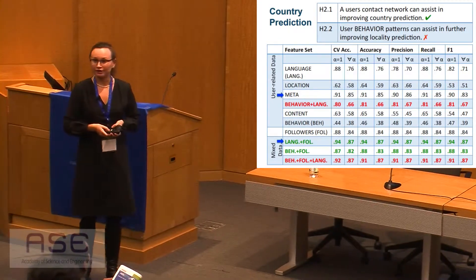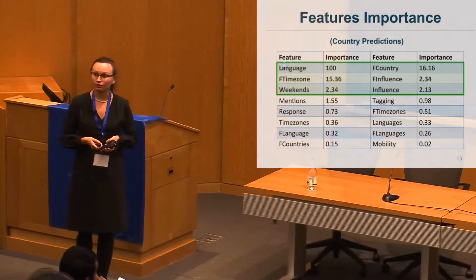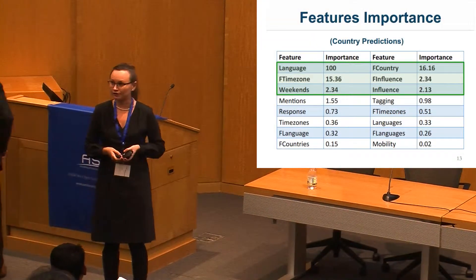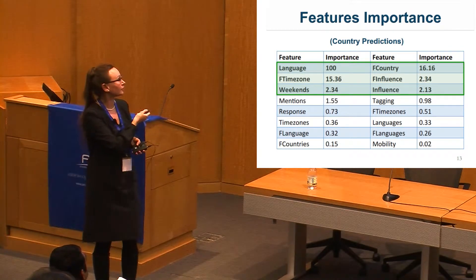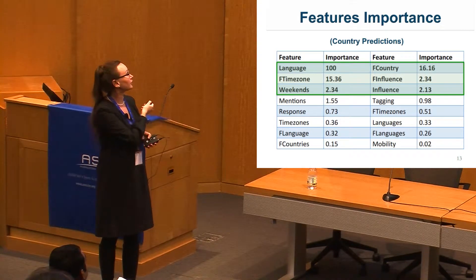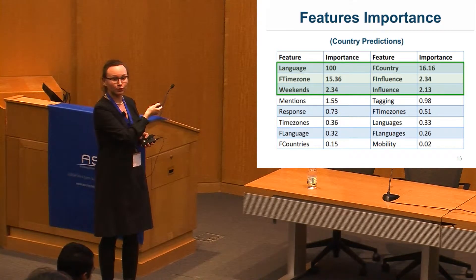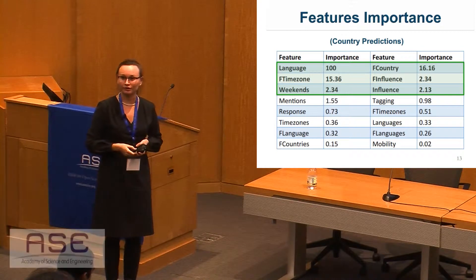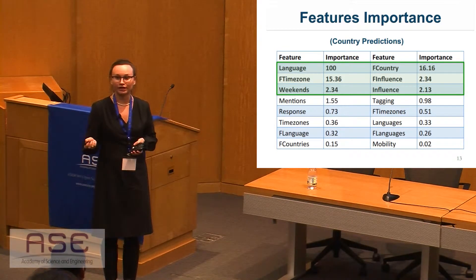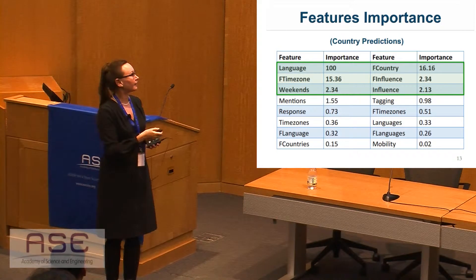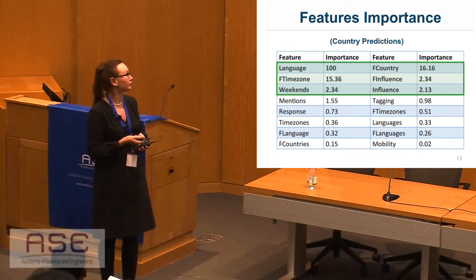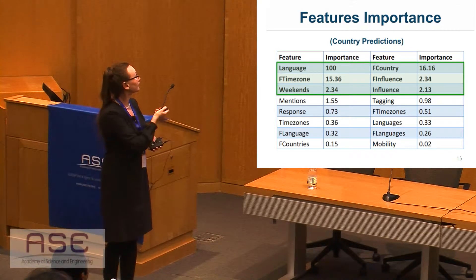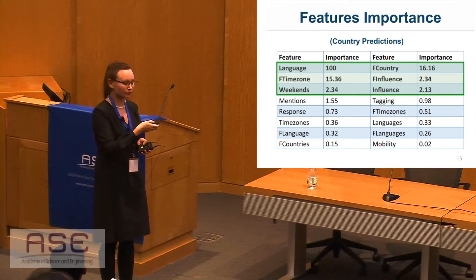We exploit decision trees for building our classification model, which makes it easy to see the importance of features. The most important features are: user language, followers' country, followers' time zone, followers' influence — which is the fraction of followers divided by the sum of followers and friends of the users — tweeting time on weekends, and influence of the users.